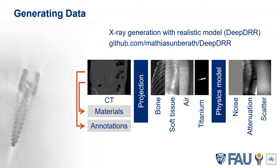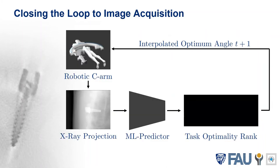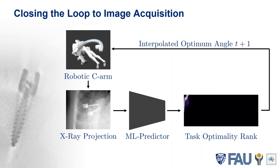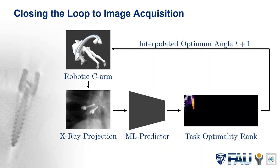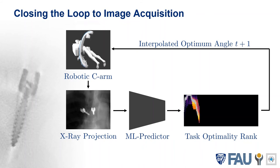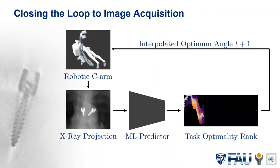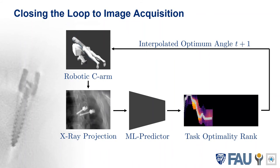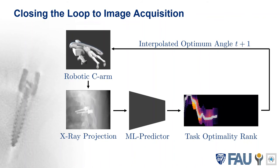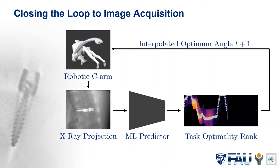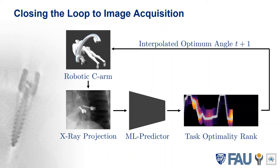The deep DRR model models multi-spectral sources and is thus able to simulate the artifacts that finally become visible around metal parts. Now we can come back to our proposed pipeline. Starting with the robotic C-arm, we get X-ray projections. We now have a trained model to predict the task optimality rank. The best image can be selected from the task optimality rank, this angle can be fed back to the scanner, the image can be acquired, and the full loop is closed.